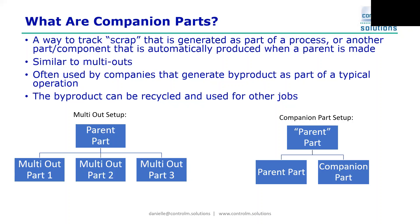The setup for that extra fabric in PLEX is very similar to a multi-out setup. For a multi-out you have your parent part which produces multiple multi-out parts. For a companion parts setup, it's just like standard production in PLEX where you're producing one part and alongside that production you also have your companion part. The biggest difference between companion parts and multi-outs is that multi-outs are typically only used at the first operation, whereas companion parts can be used at any operation on your process routing.